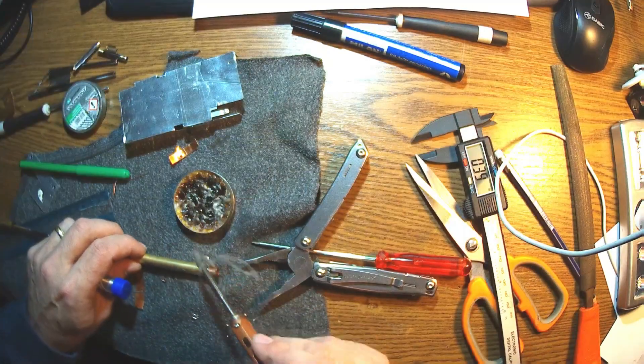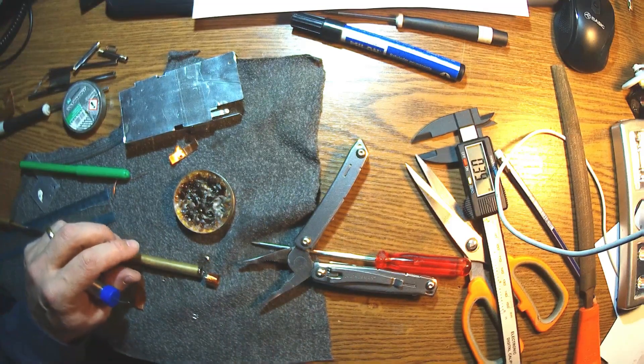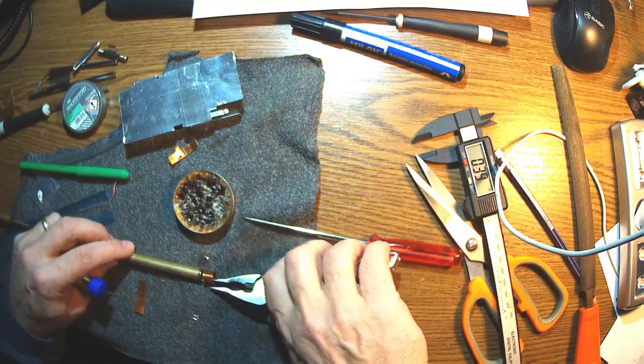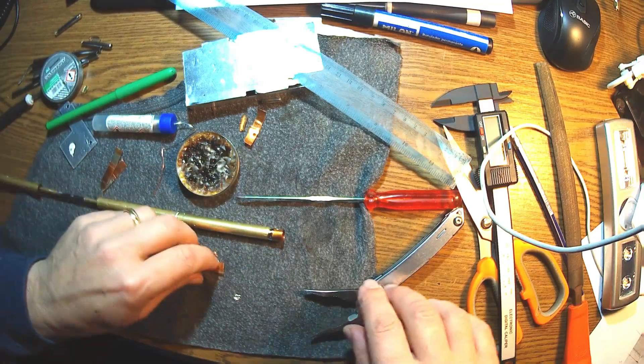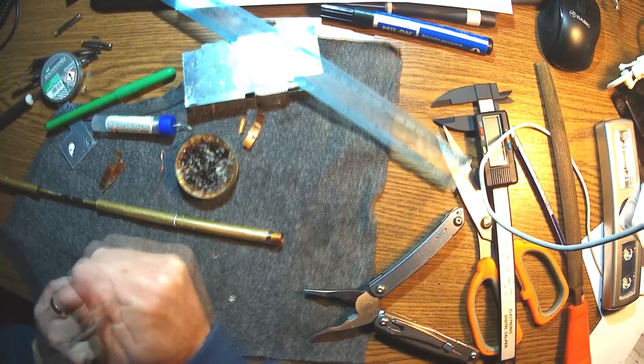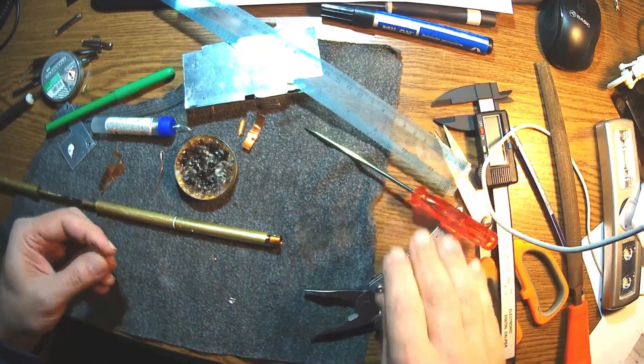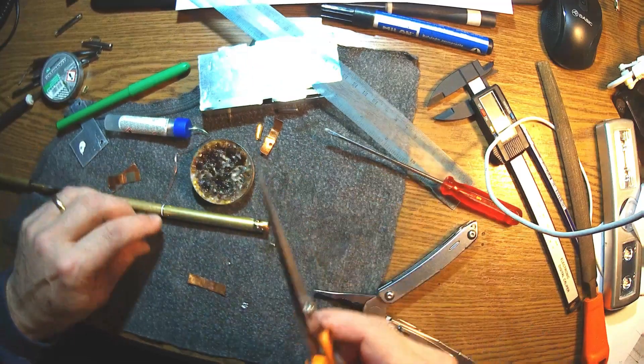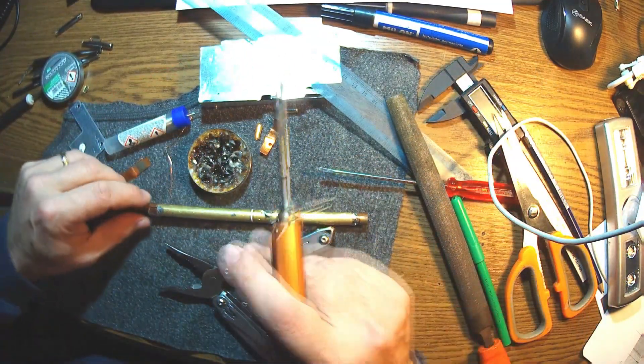This little soldering iron, the TS100, it's amazing. I think this is good enough. Let me do the other one. To cut a millimeter or so. It's getting hot very quickly, so that has to be done.